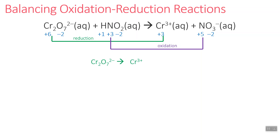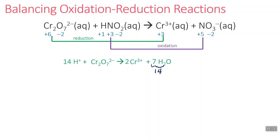For the reduction half reaction, the first thing we need to balance is chromium. Once everything other than hydrogen and oxygen is balanced, we deal with oxygen. There are seven oxygens on the reactant side, so we add seven H2O to the product side. Then we balance hydrogen: that gives 14 H+ ions, which we add to the reactant side.